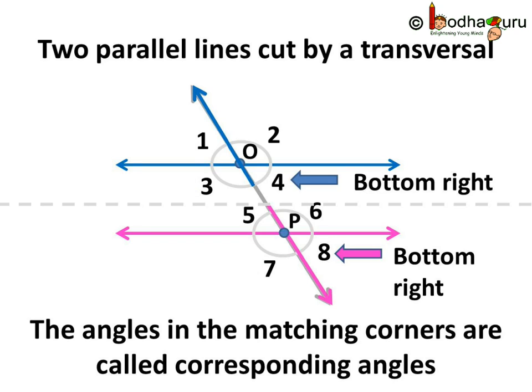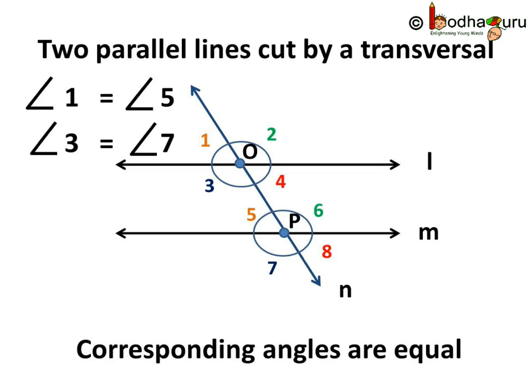Now coming to the fourth pair: angle 4 is at the bottom right of the intersection O, and angle 8 is also at the bottom right of the intersection P. So angle 4 and angle 8 are corresponding angles as they too are in matching corners — that is, the bottom right of each intersection. So now you know how to find the corresponding angles by finding the angles in the matching corners.